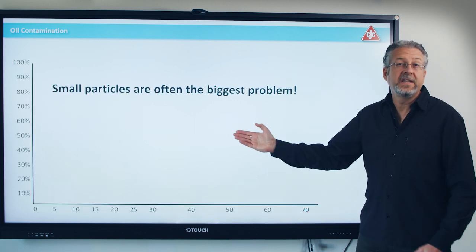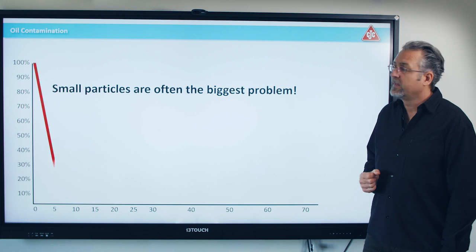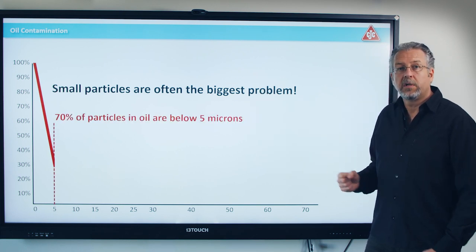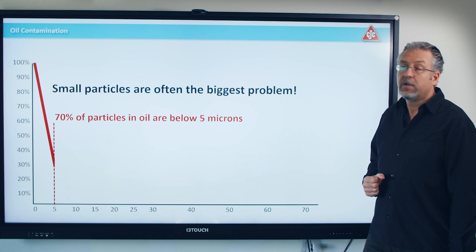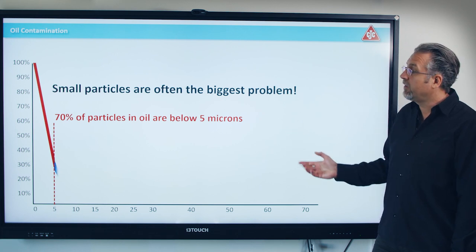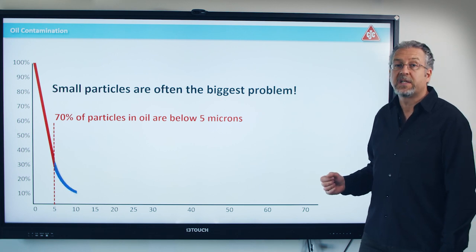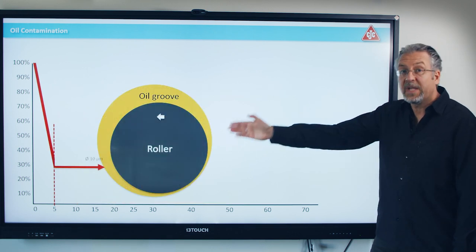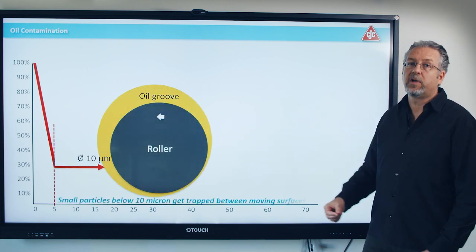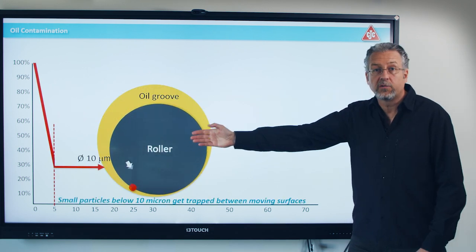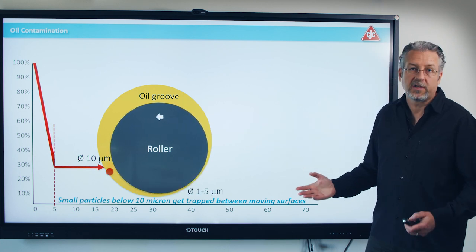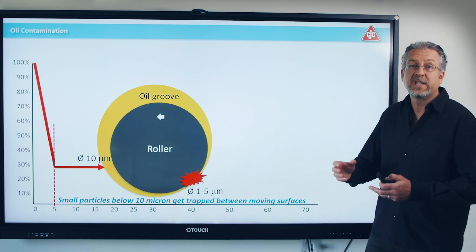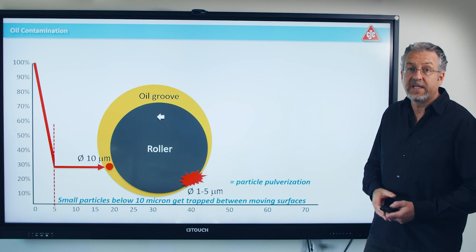Unfortunately, there are a lot of these tiny particles. Roughly 70% of oil particles are below five micron, and only 10% are bigger than 10 micron. So there may be room for a particle of 10 micron in the oil groove, but in the load zone there is not.